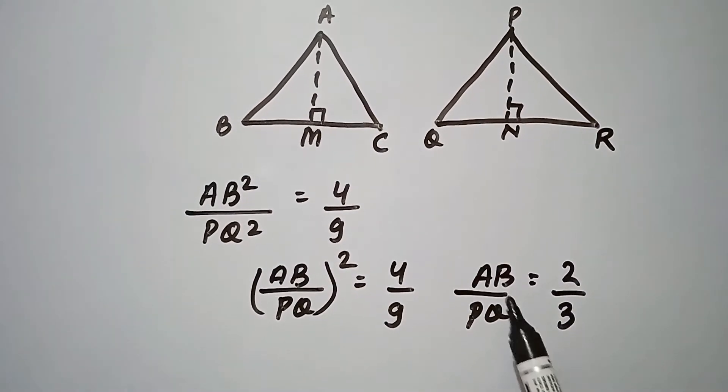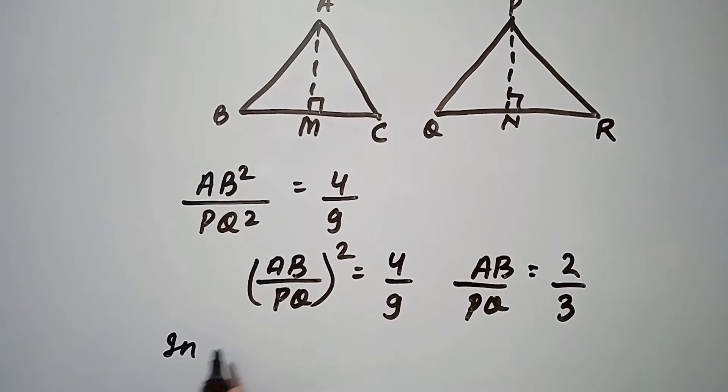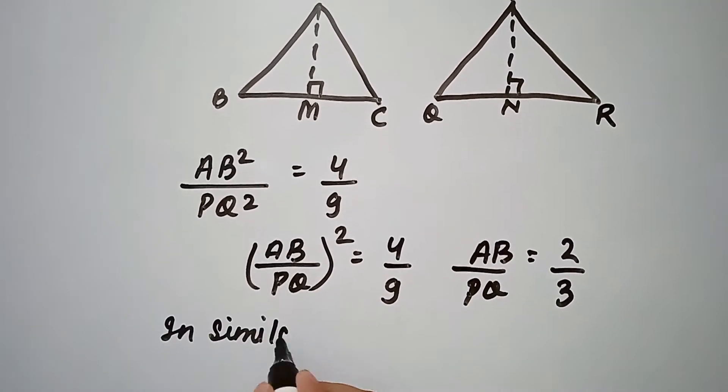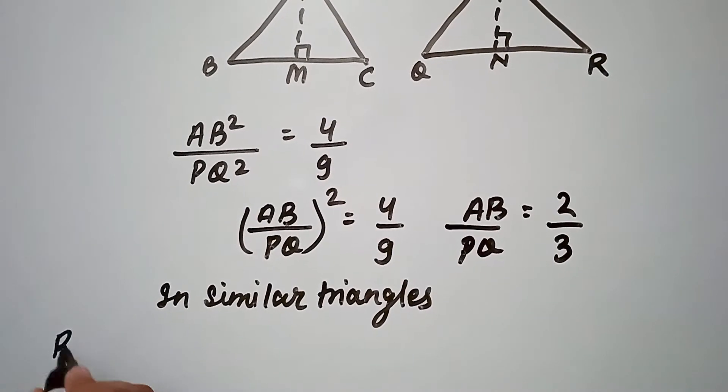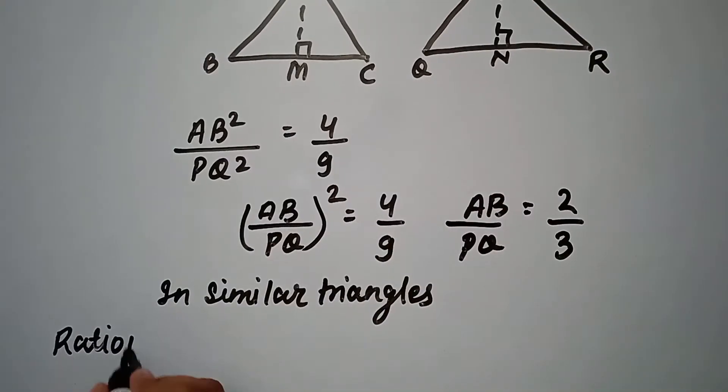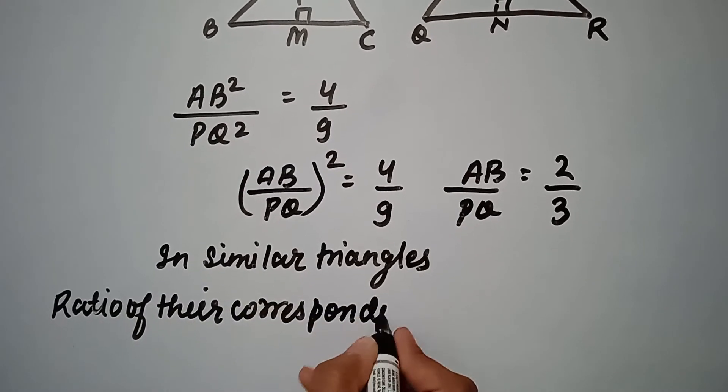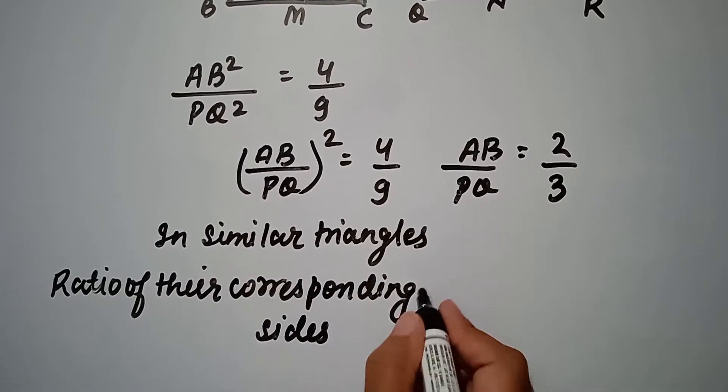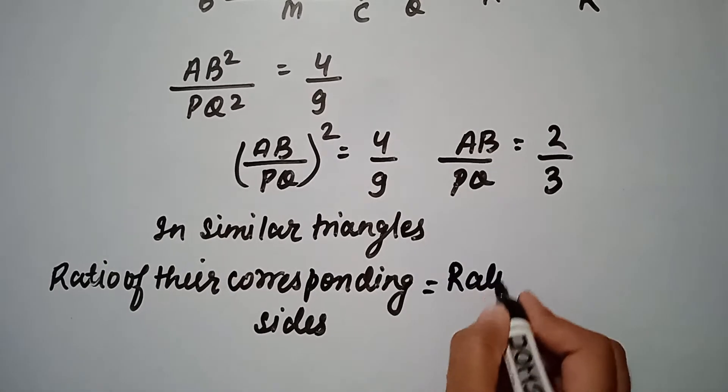Now we have found AB upon PQ value, and we know that in similar triangles, ratio of their corresponding sides is equal to ratio of their altitudes.